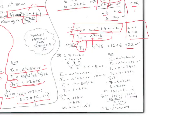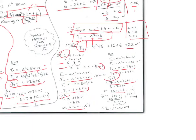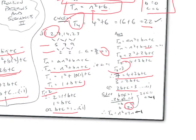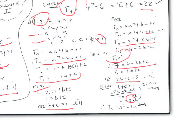For the final sequence 2, 7, 14, 23: the first and second differences confirm A = 1. With Tn = n² + Bn + C, T1 gives equation B + C = 1 and T2 gives a second equation. Solving simultaneously yields B = 2 and C = −1. The nth term rule is Tn = n² + 2n − 1.